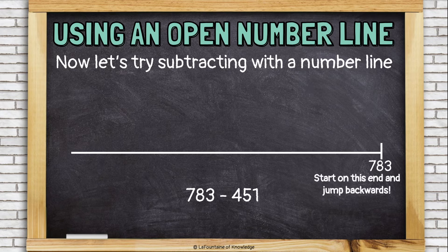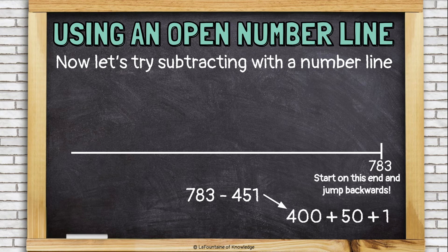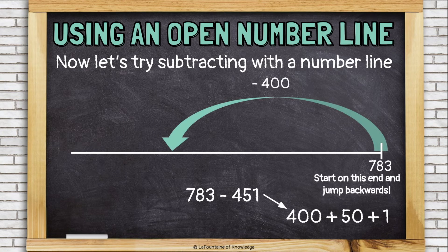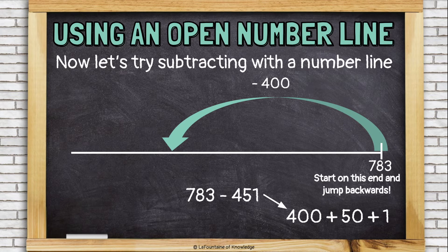Let's try expanded form. 400 plus 50 plus 1. First, we'll take away 400. So if I'm at 783 and I take away 400, I'll land at 383.